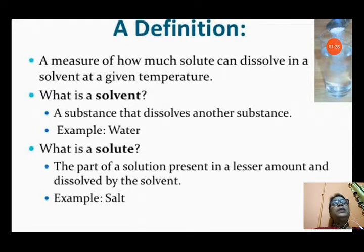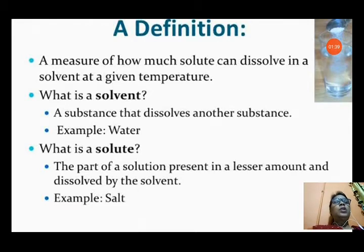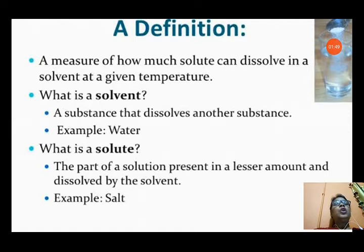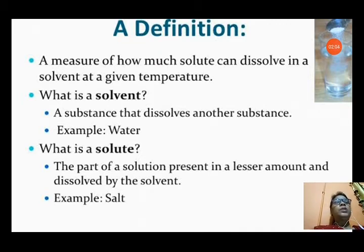What is a solvent? A solvent is a substance that dissolves another substance. For example, water dissolves salt — so water is the solvent. What is a solute? The solute is the part of a solution present in a lesser amount that is dissolved by the solvent. So if salt is dissolved in water, salt is the solute and water is the solvent.